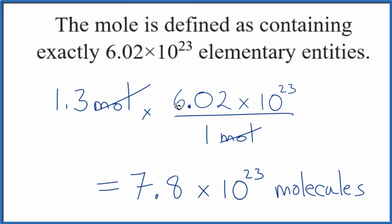So when we convert from moles to molecules or atoms or ions, we're just multiplying by Avogadro's number. Now you try one.